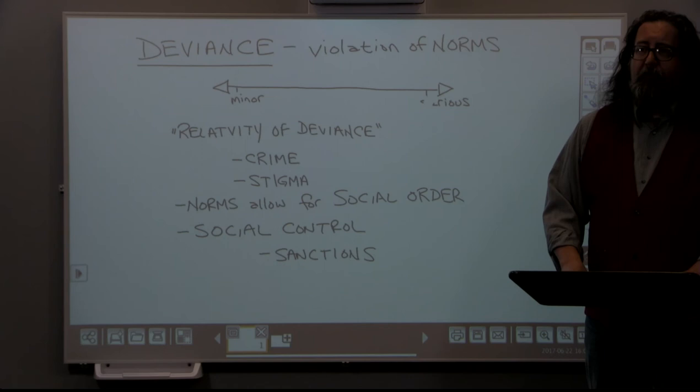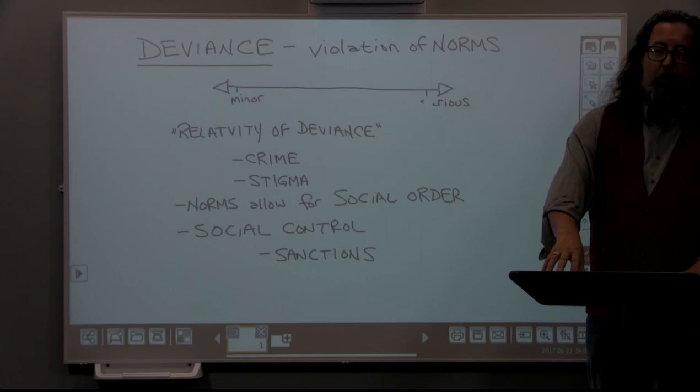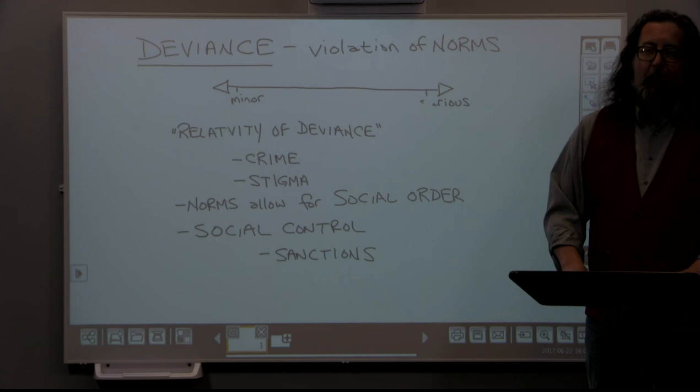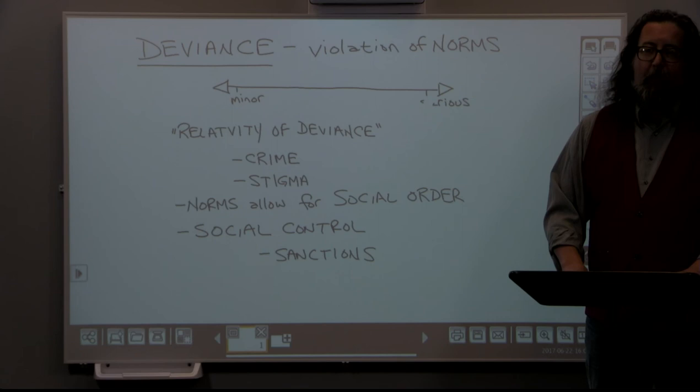Informal sanctions are the ways we let people know they're not operating in an expected way without formal authority. If you're a driver and a pedestrian walks out in front of you, you might not have the authority to write them a ticket, but by blowing your horn or using certain words or gestures, you let that person know they're operating in a way you don't approve of. That would be considered an informal negative sanction.